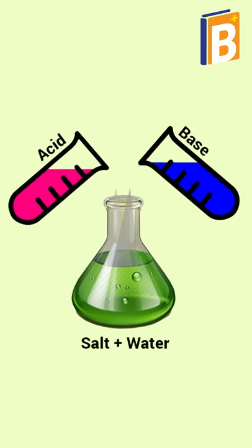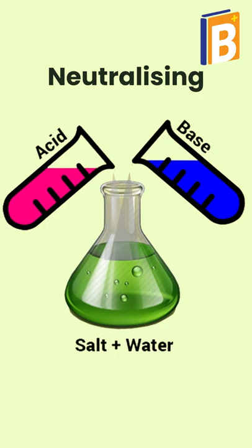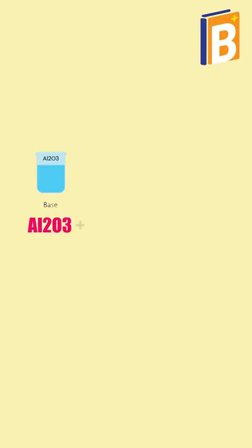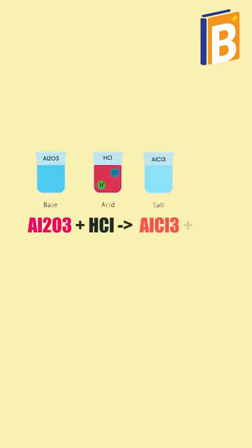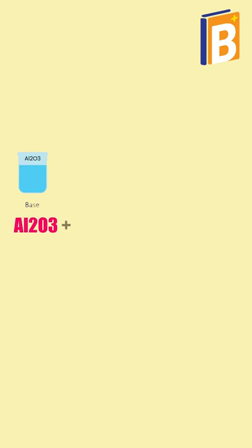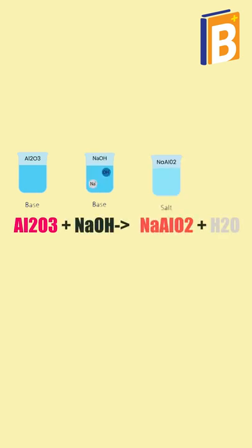Al₂O₃ + HCl gives AlCl₃ + H₂O — it acts as a base here. Al₂O₃ + NaOH gives NaAlO₂ + H₂O — it acts as an acid here.